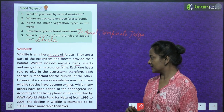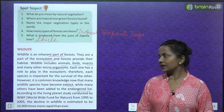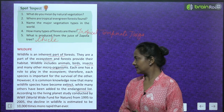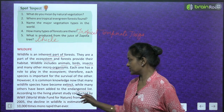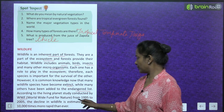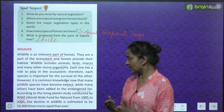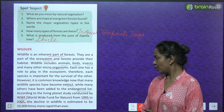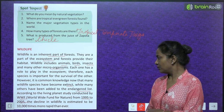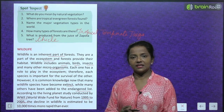However, many wildlife species have become extinct, while many others have been added to the endangered list. According to a living planet study conducted by WWF from 1995 to 2005, the decline of wildlife is estimated to be 10,000 times more rapid than ever before.